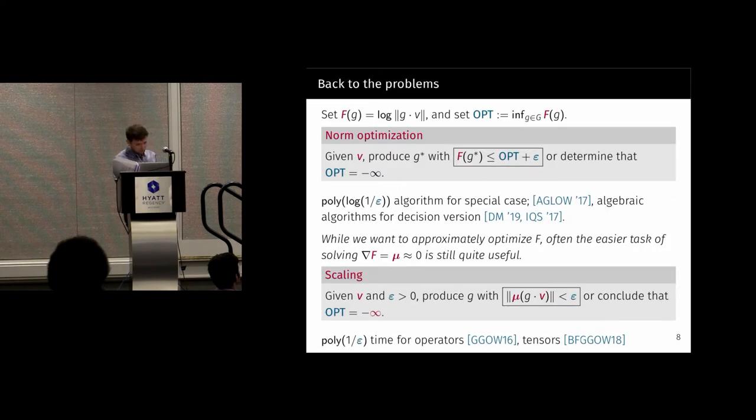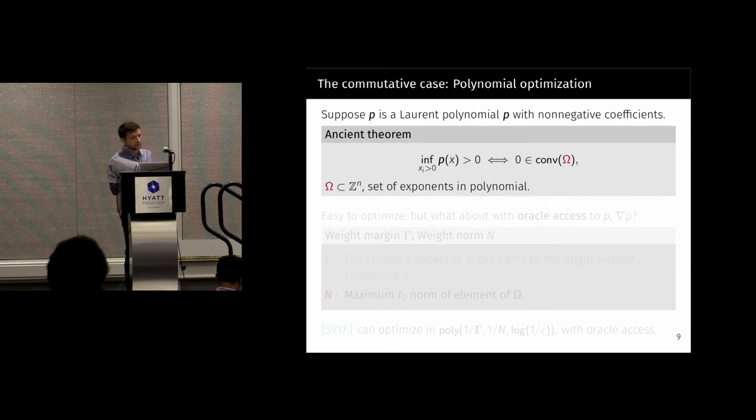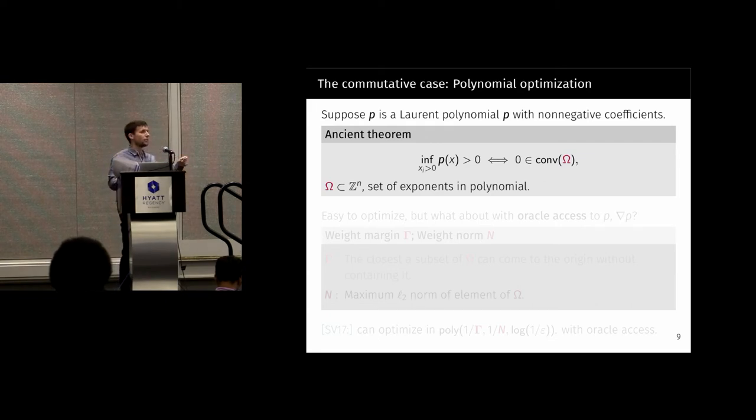Before I tell you what our guarantees are, I want to mention a case that has the same flavor as the general problem. So which parameters are making things hard or easy? The problem is polynomial optimization. Imagine you have a polynomial with positive coefficients. We have another ancient theorem that says that the infimum of this polynomial over the positive orthant is bigger than zero if and only if zero is in the convex hull of the exponents that are showing up in this multivariate polynomial. This thing also has a name, it's the Newton polytope.